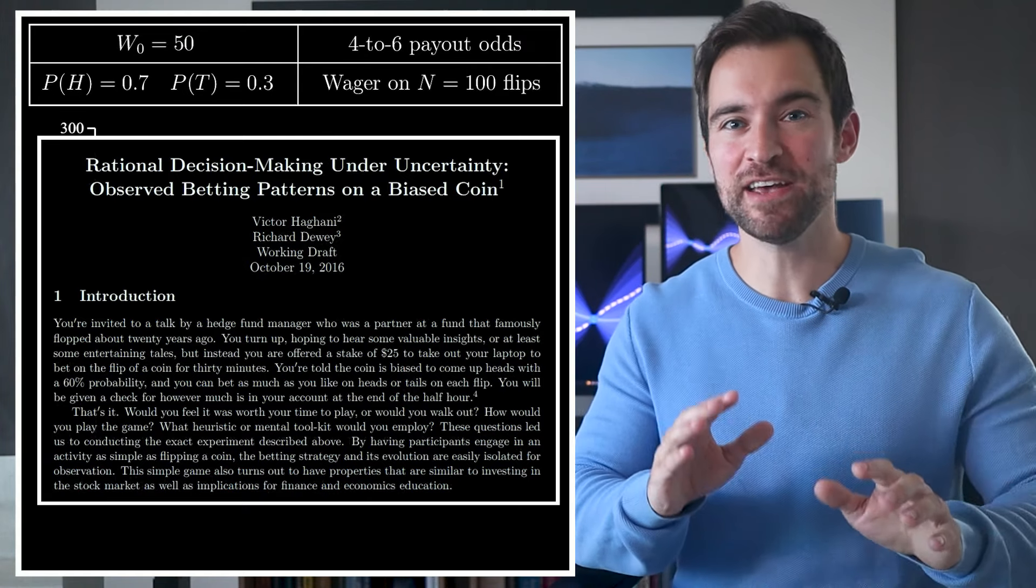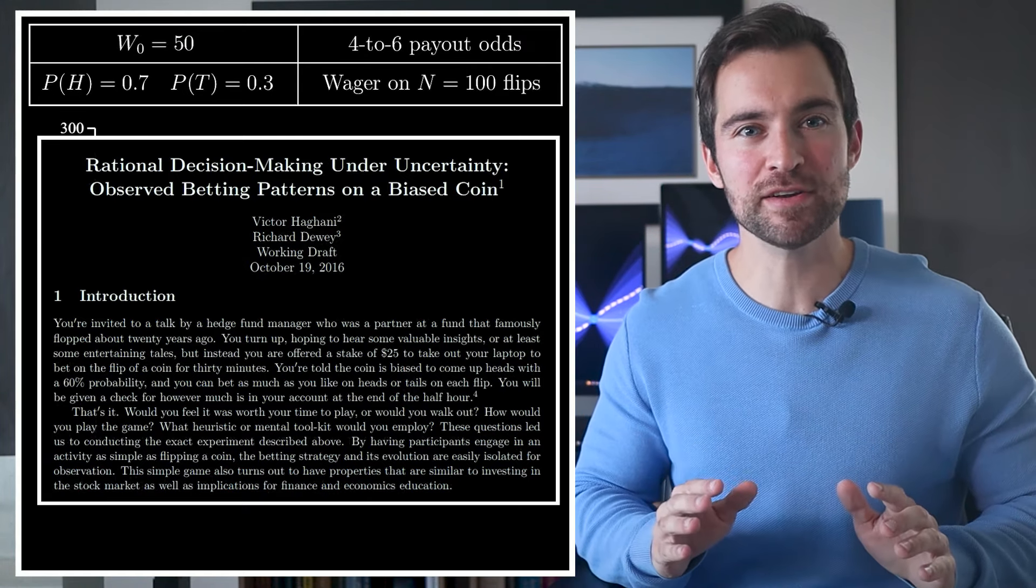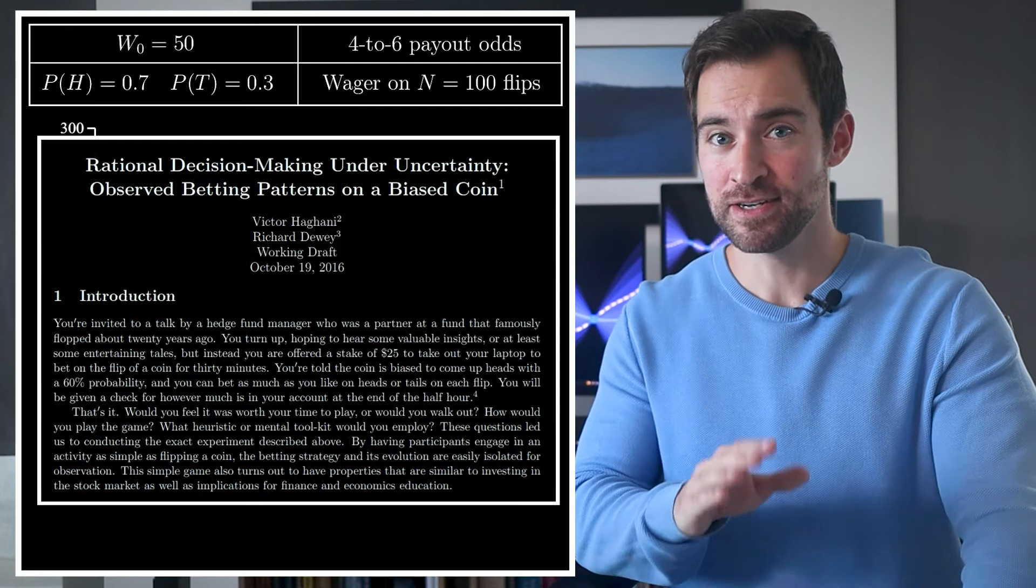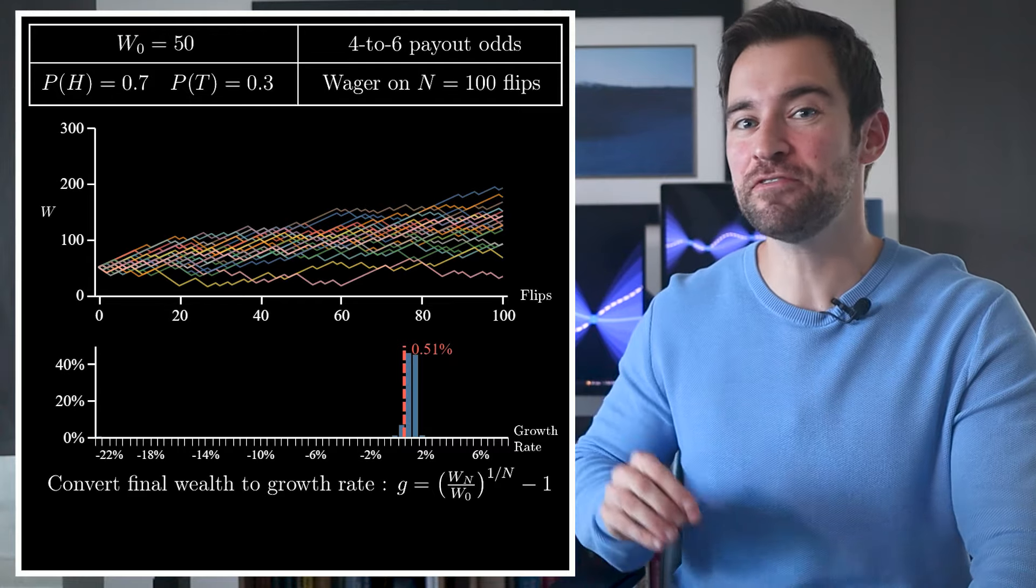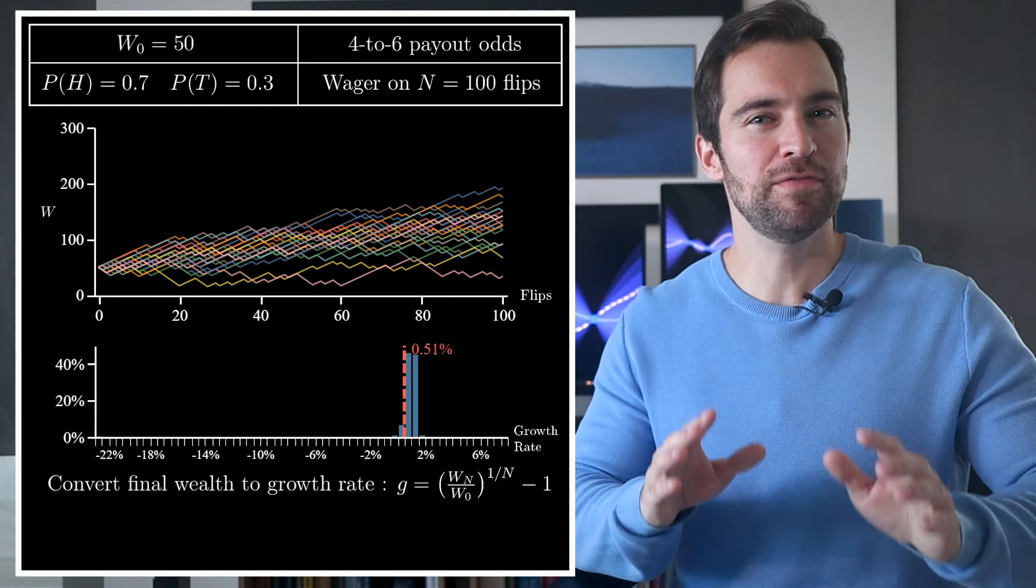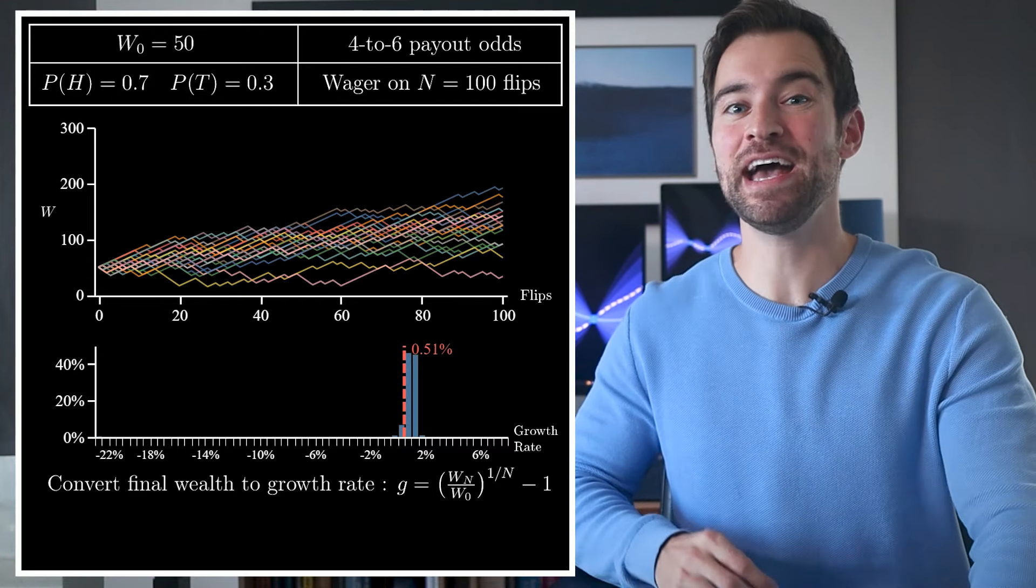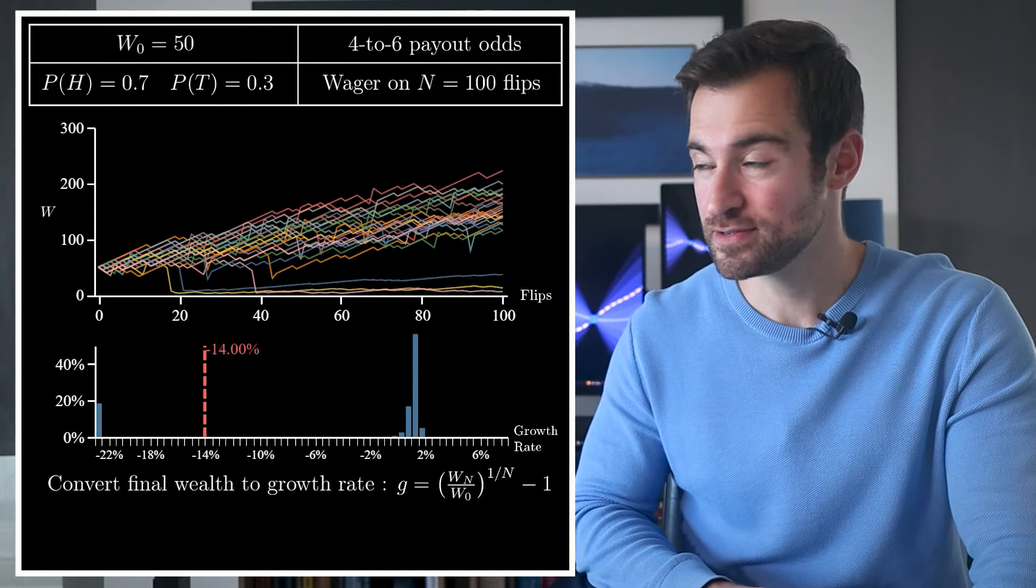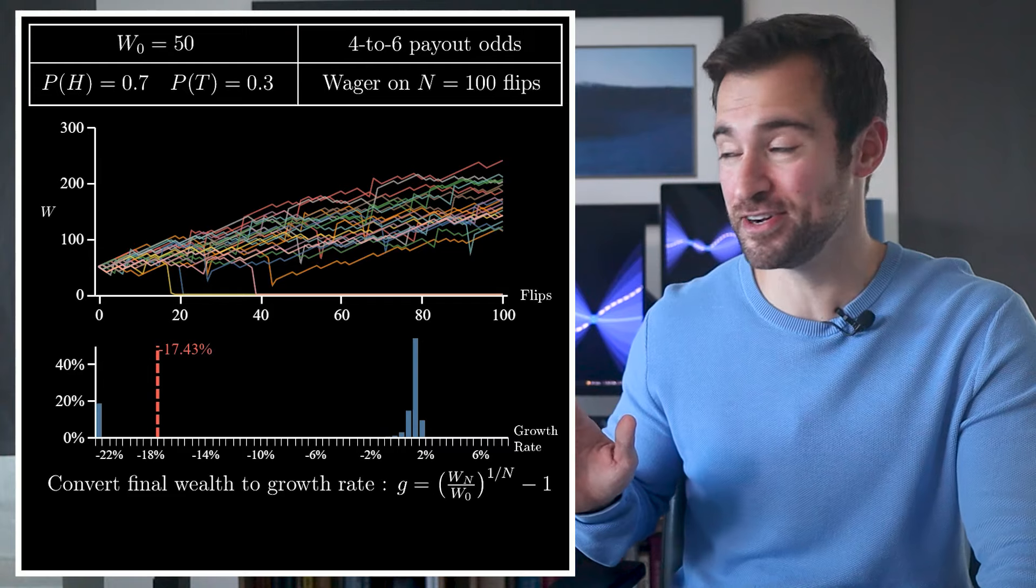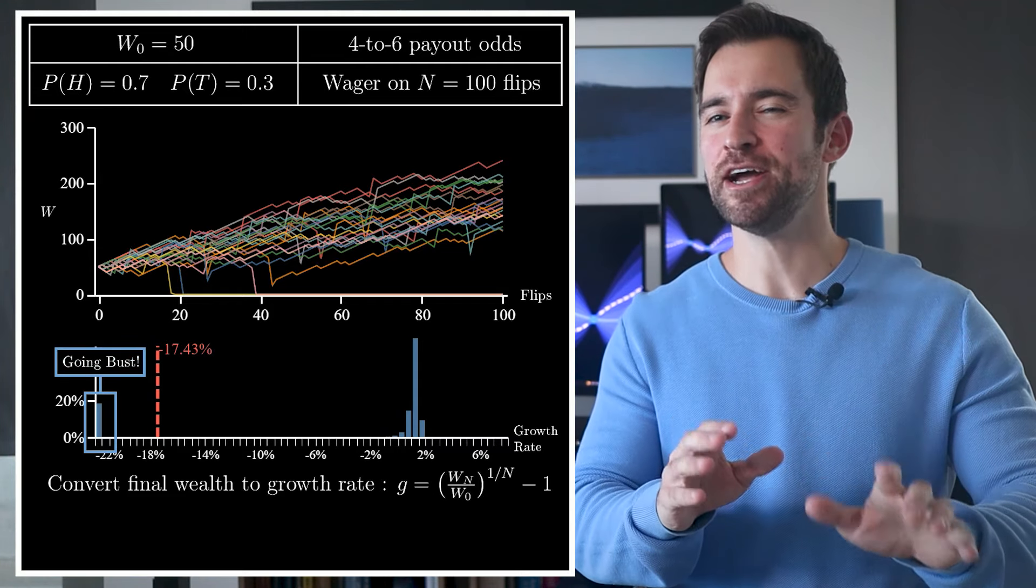For example, if people saw a string of one outcome, they were more likely to bet big on the next flip. So just for fun, let's try that. Let's say you'll bet $5 each round. But if you see three tails in a row, you'll bet $50. Well, that would give you this. Oh, not good. You go bust quite a bit.